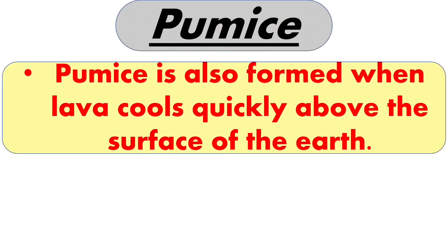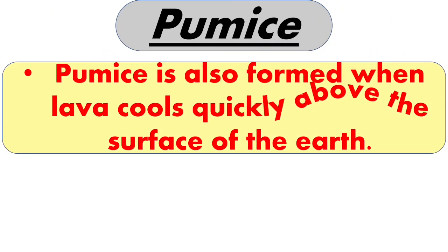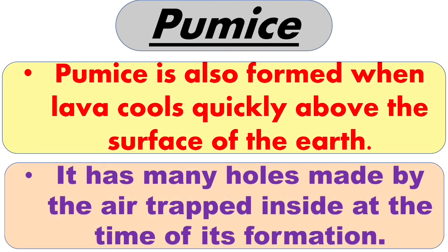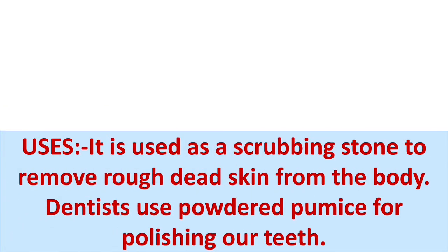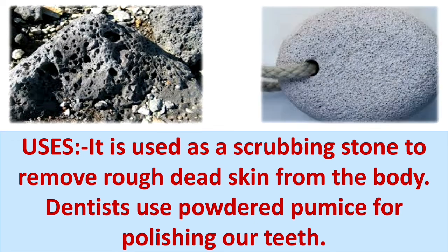Next is pumice. Pumice is also formed when lava cools quickly above the surface of earth. It has many holes made by air trapped inside at the time of its formation. It is used as a scrubbing stone to remove rough dead skin from the body.